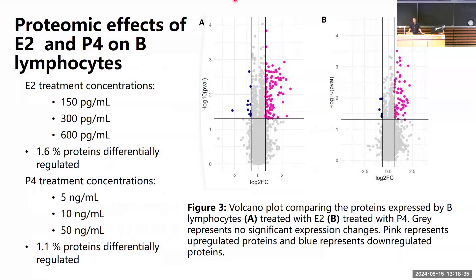B lymphocytes were treated with three biologically relevant concentrations of estradiol, which resulted in 1.6% of proteins being differentially regulated. The estradiol treatment resulted in downregulation of calcium binding proteins and apoptosis-inducing proteins and upregulation of some metal ion binding proteins. The B lymphocytes were also treated with three different concentrations of progesterone, which resulted in 1.1% of proteins being differentially regulated. These progesterone treatments resulted in upregulation of apoptosis-inducing proteins and heme binding proteins and downregulation of proteins involved in transcription regulation. Both treatments resulted in differential regulation of proteins involved in immune system function.